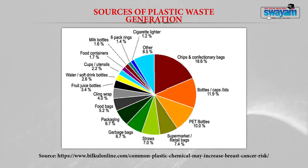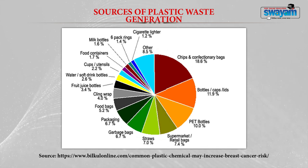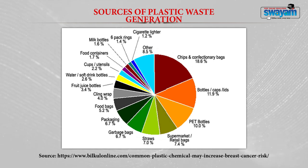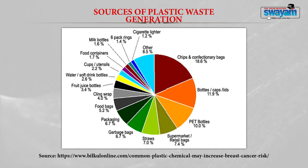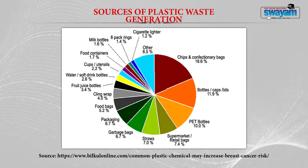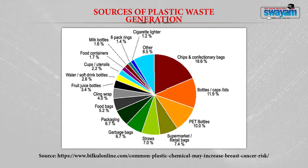Then bottles, caps, and lids contribute 11.9 percent, followed by PET bottles at 10 percent. Other plastics occupy the next place at 8.5 percent. Supermarket retail bags and straws contribute 7.4 and 7 percent respectively. Garbage bags are 6.7 percent. Plastics from the packaging industry also contribute 6.7 percent. Food bags are 5.2 percent. Juice bottles and water/soft drink bottles contribute 3.4 and 2.6 percent. Food containers, milk bottles, and pack rings contribute 1.7, 1.6, and 1.4 percent respectively.